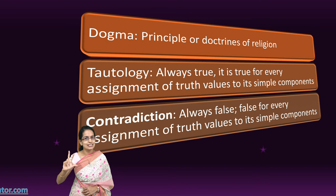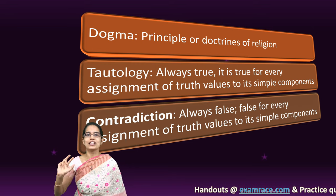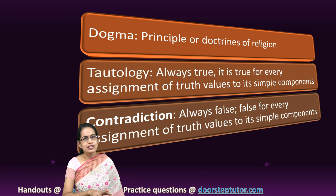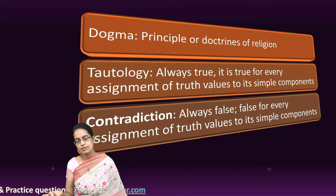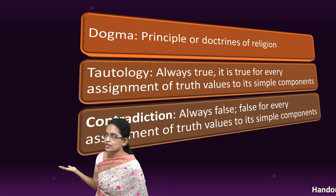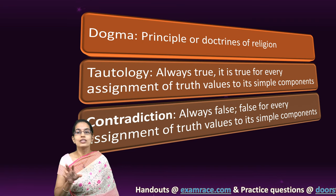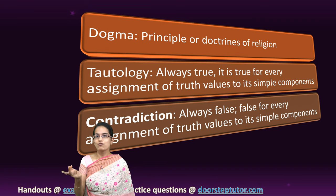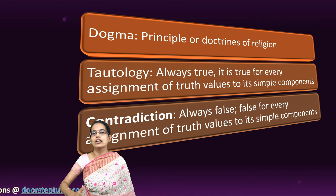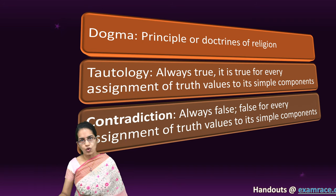There is interestingly something in between. When there is always truth, it is tautology. When there is always false, it is contradiction. But what if it may be true or may be false? Then it is known as contingency. When I say it is raining — this is a contingency. It can be raining today, it might not be raining tomorrow. So this is a contingency. Propositions always true are tautology, always false are contradiction, and sometimes true, sometimes false is contingency.